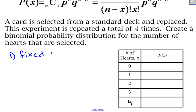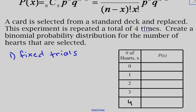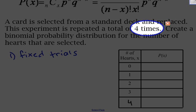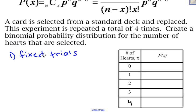First, I need to check: are there a fixed number of trials? And there are — it tells me right here that there are four times. I'm going to deal a card, put it back, and then deal it again, four times. No more than that, no less than that. So there are a fixed number of trials.